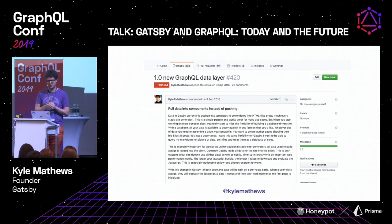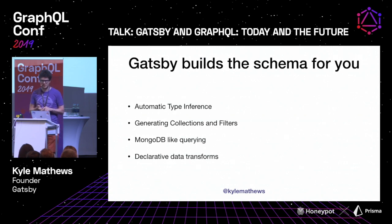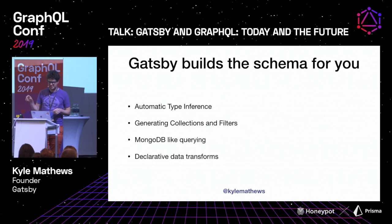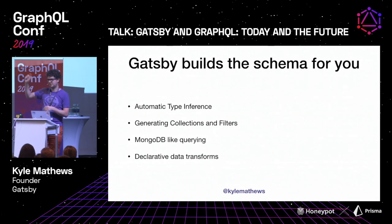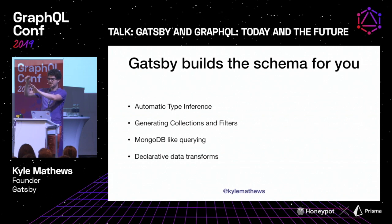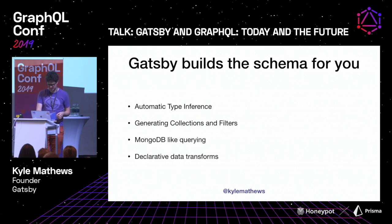GraphQL has a lot of other things that have proved helpful. What I created was a system that lets you build plugins, pull in data, do automatic type inference, and also do a lot of other niceties like generating collections and filters you can query through — MongoDB-like query operators — and declarative data transformations. Transformer plugins let you optionally configure or transform your data in different ways. For example, there's a transformer that does image transformations: in GraphQL you can say 'I want an image that's 400 pixels wide,' and it'll do the transform and return a source path.